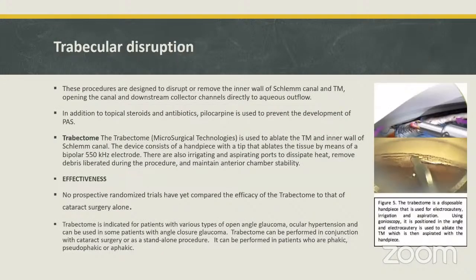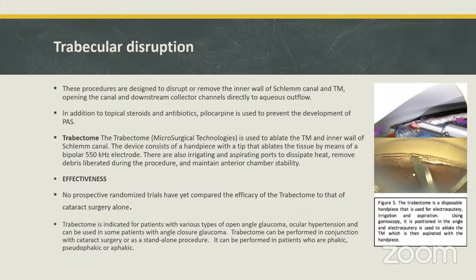The next category is methods of trabecular disruption. These procedures are designed to disrupt or remove the inner wall of Schlemm's canal and trabecular meshwork, opening the canal and downstream collector channels directly to aqueous outflow. The first device is trabectome, used to ablate the trabecular meshwork and inner wall of Schlemm's canal. It consists of a handpiece with a tip that ablates tissue by means of a bipolar 550 kHz electrode, with irrigating and aspirating ports to dissipate heat and remove debris.